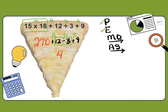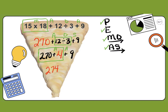Bring everything down: 270 plus 4 plus 9. We have two additions — equal in priority, so we work left to right. First: 270 plus 4 is 274. Bring down plus 9. Last step: 274 plus 9 is 283. If you got 283, well done — enjoy your first bite!